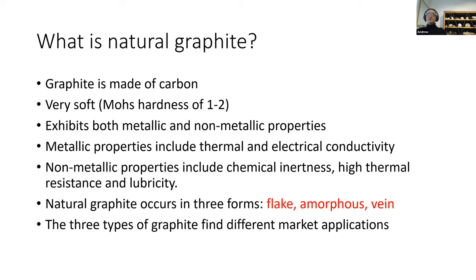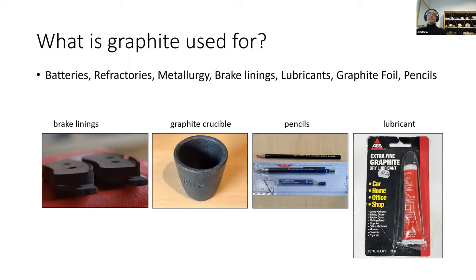Natural graphite occurs in three forms: flake, amorphous, and vein. These three types of graphite find different market applications, and we're going to focus on the flake because that's the biggest market. The sort of traditional uses include refractory metallurgy, and the ones to the right — batteries — is where the market is growing.